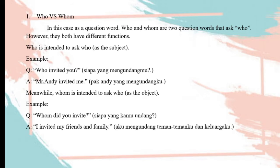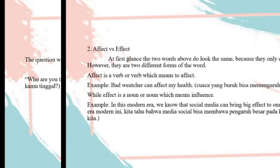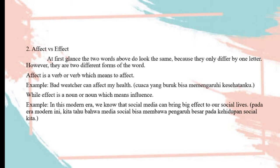For example: 'Hey Mr. Andy, invite me.' Meanwhile, 'whom' is intended to ask about a person as the object. Example: 'Whom did you invite?' — 'I invited my friend and family.' The question word 'who' can also be used informally to ask about an object, as in: 'Who are you talking to?' or 'Who do you live with?'